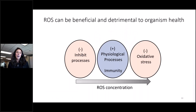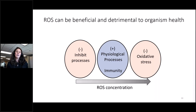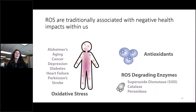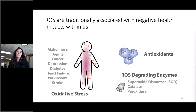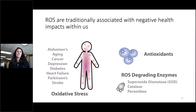ROS can be both beneficial and harmful to organisms. If they build up inside an organism, it can lead to oxidative stress. But if there is too little ROS present, it can inhibit essential physiological processes — it's a Goldilocks effect where you need just the right amount. Traditionally, ROS have had a negative connotation because when they build up inside us, they can be precursors to many different diseases. That's why we are encouraged to eat foods rich in antioxidants such as blueberries, spinach, or dark chocolate. Many organisms also have ROS-degrading enzymes such as superoxide dismutase, catalase, and peroxidase, indicating how important regulating ROS is to organism health.